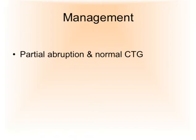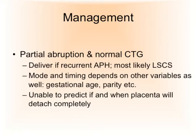Regarding management: let's discern between a partial abruption with a normal CTG versus other scenarios. Management depends on several variables. For delivery, we would usually expedite delivery if dealing with recurrent APH — most likely offering caesarean section. Sometimes if we are dealing with a multiparous patient who had previous vaginal deliveries and the cervix is already 3–4 cm open, we might aim for vaginal delivery. The mode and time of delivery is not a black and white answer — it depends on gestational age, parity, and so forth. What is concerning is that once you diagnose a partial abruption, there is no way to predict when the placenta will detach completely, and the consequences can be catastrophic — fetal demise.